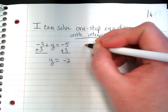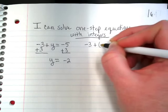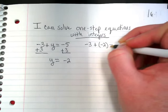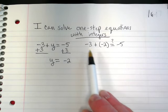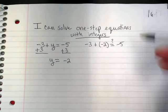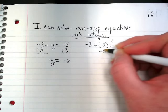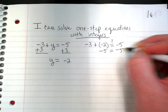Let's go and check. Negative 3 plus negative 2. Does that equal negative 5? If I have negative 3 and a negative 2, it does equal negative 5. So this checks.